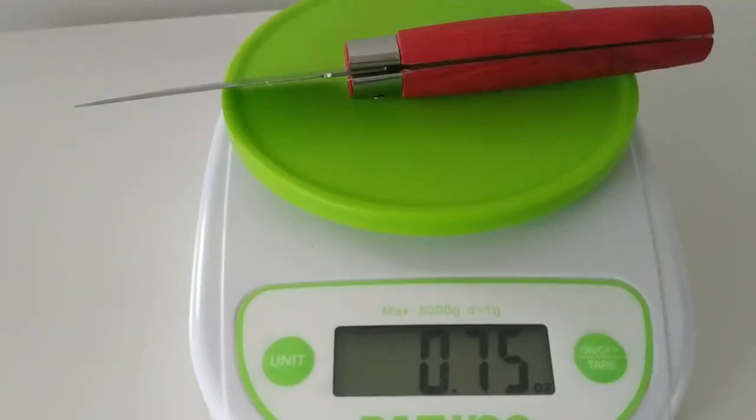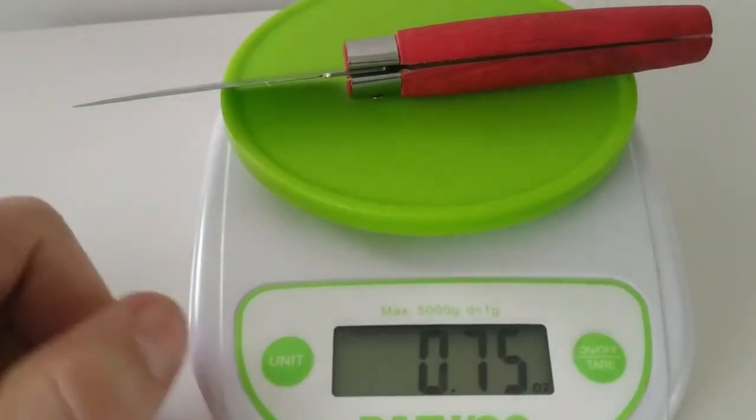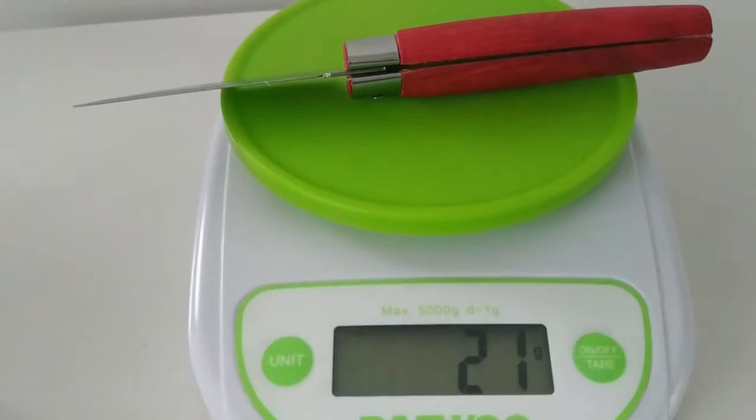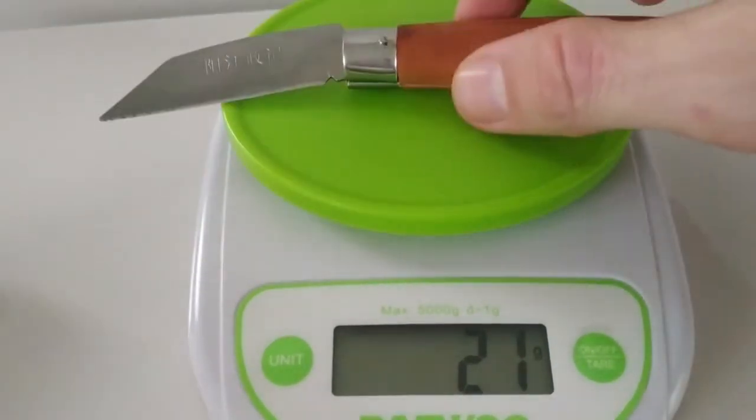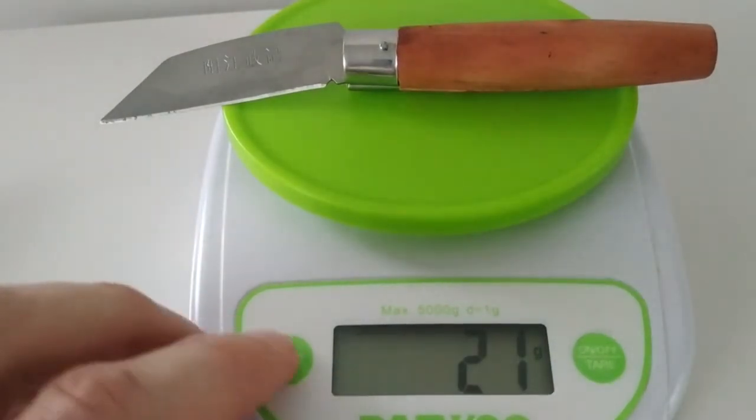As you can see, three quarters of an ounce, it's super lightweight. It's like Victorinox Classic SD, it's 21 grams. So yeah, that's the benefit, that it's super lightweight. And the same goes for the other one.